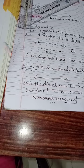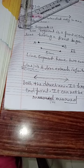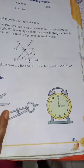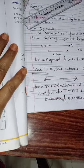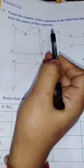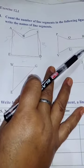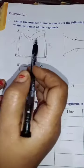I am giving you a PDF of chapter number 10 so you can complete your portion up to there. Now let us come to exercise 12.1. Ray, line, and line segment are clear to everybody. Now in exercise 12.1, the question says: count the number of line segments in the following figure and write their names.